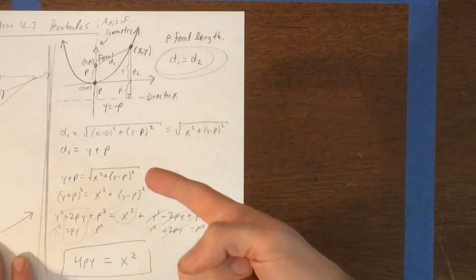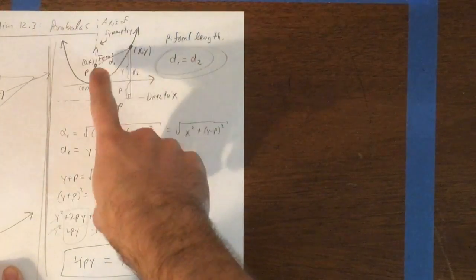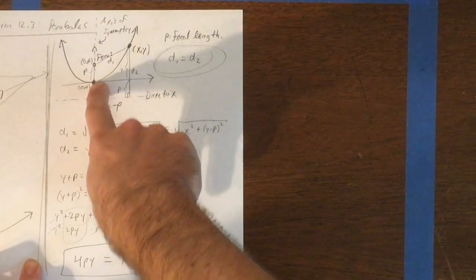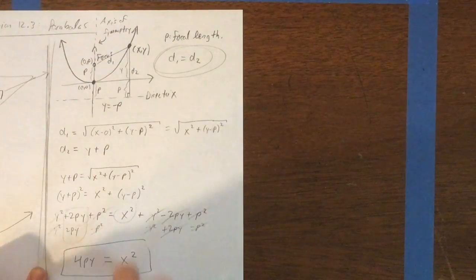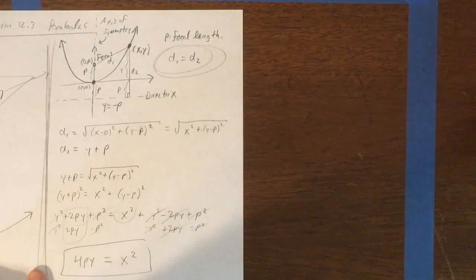In the last video we did this, and we came up with an equation for a parabola with a vertex at (0,0), a focal length p, and oriented vertically with a vertical axis of symmetry. And we got this: 4py = x².